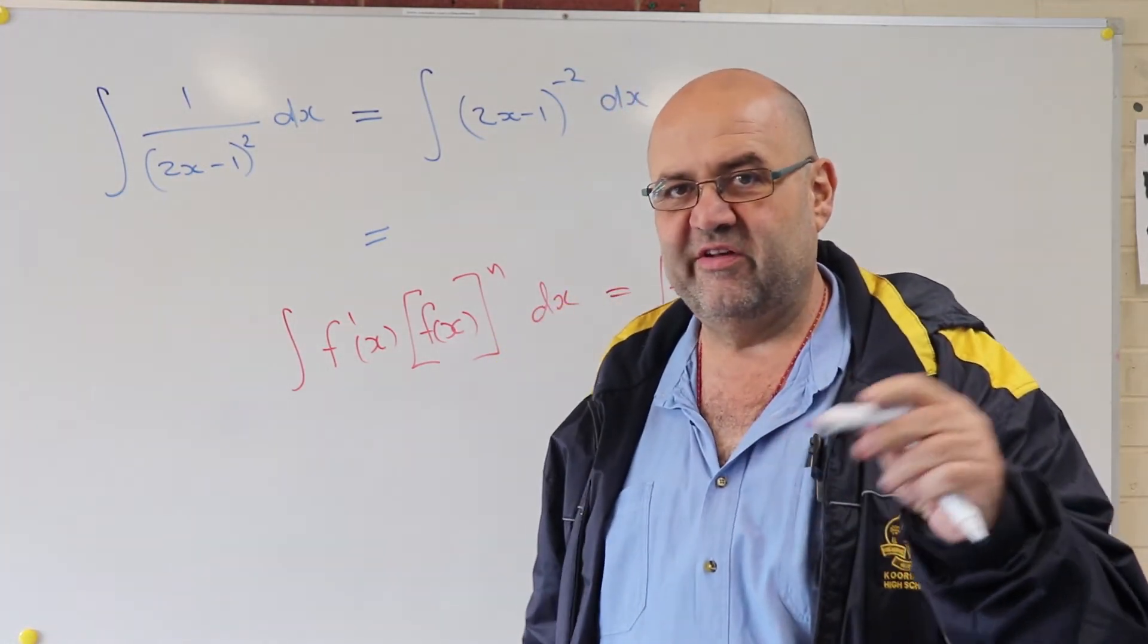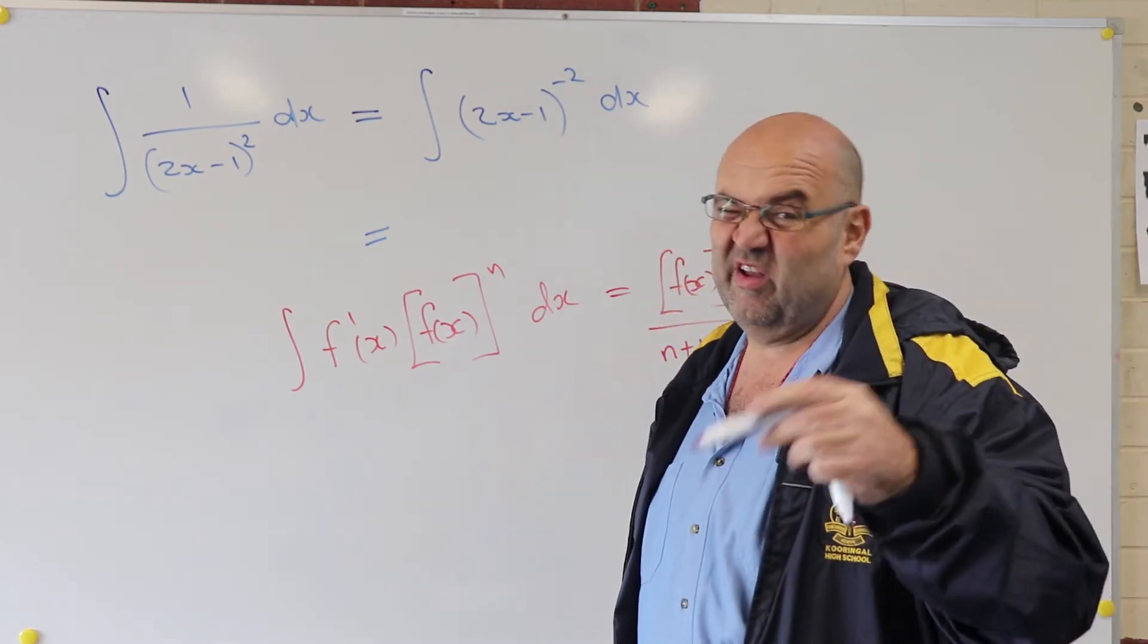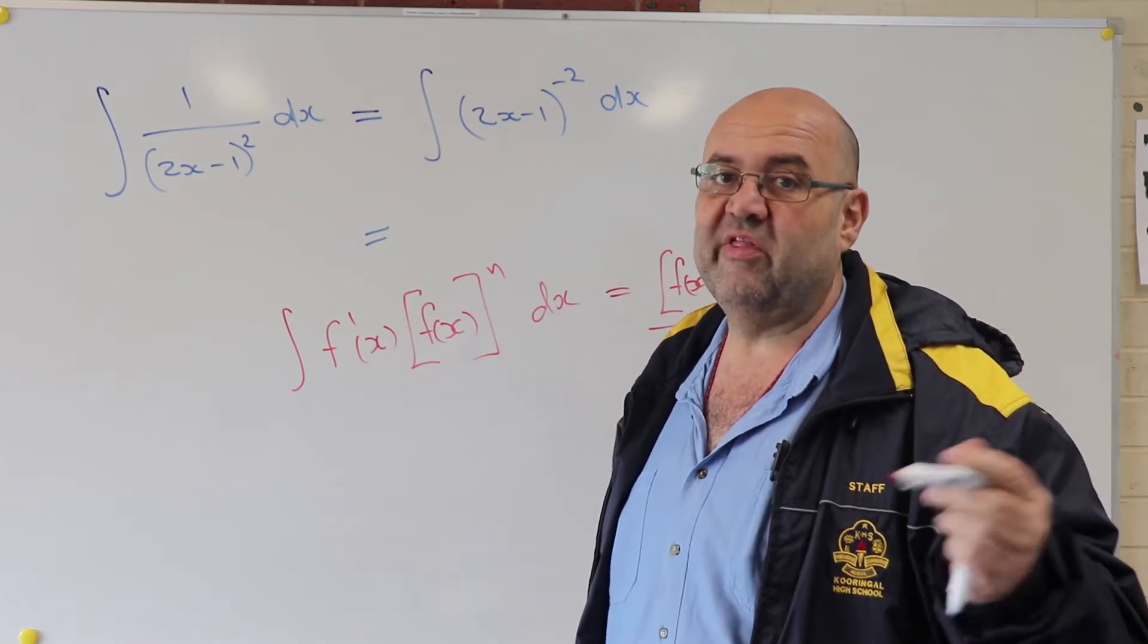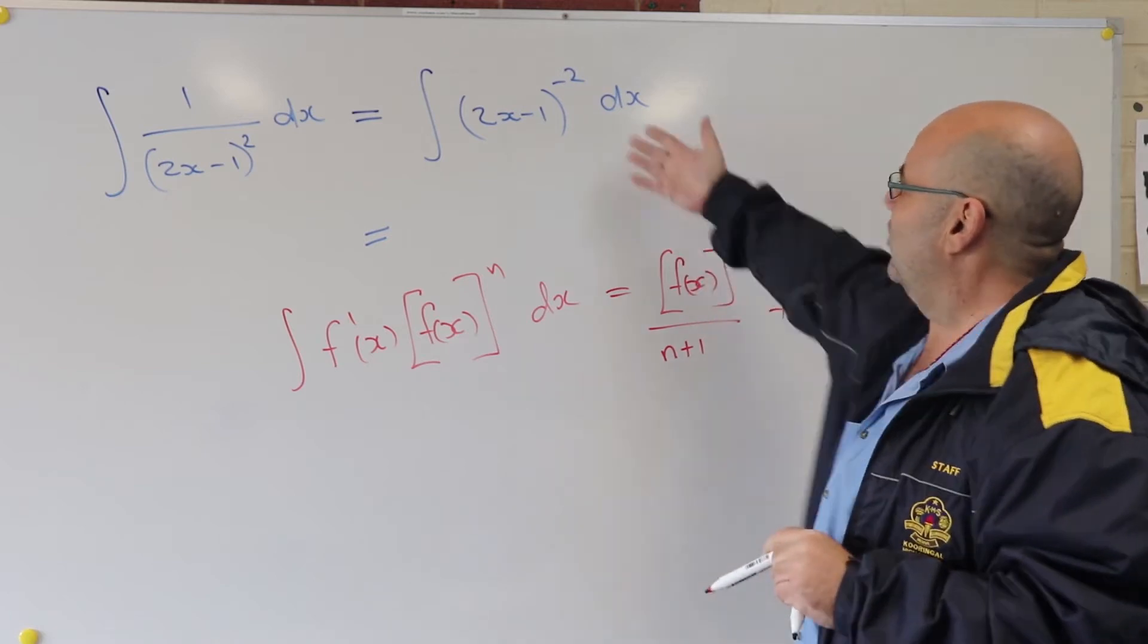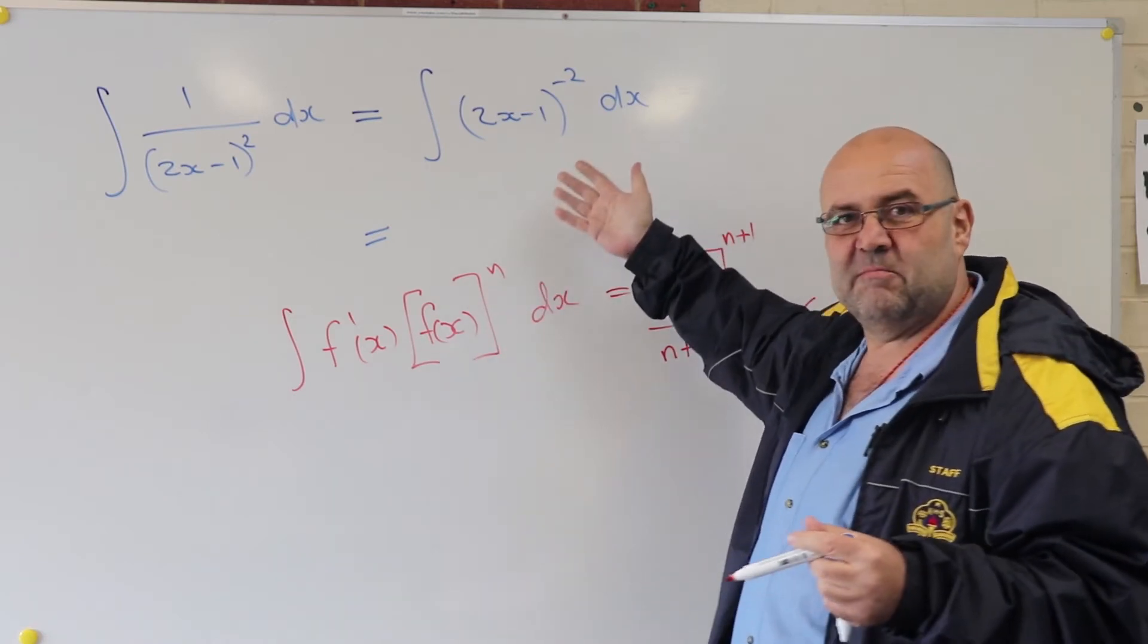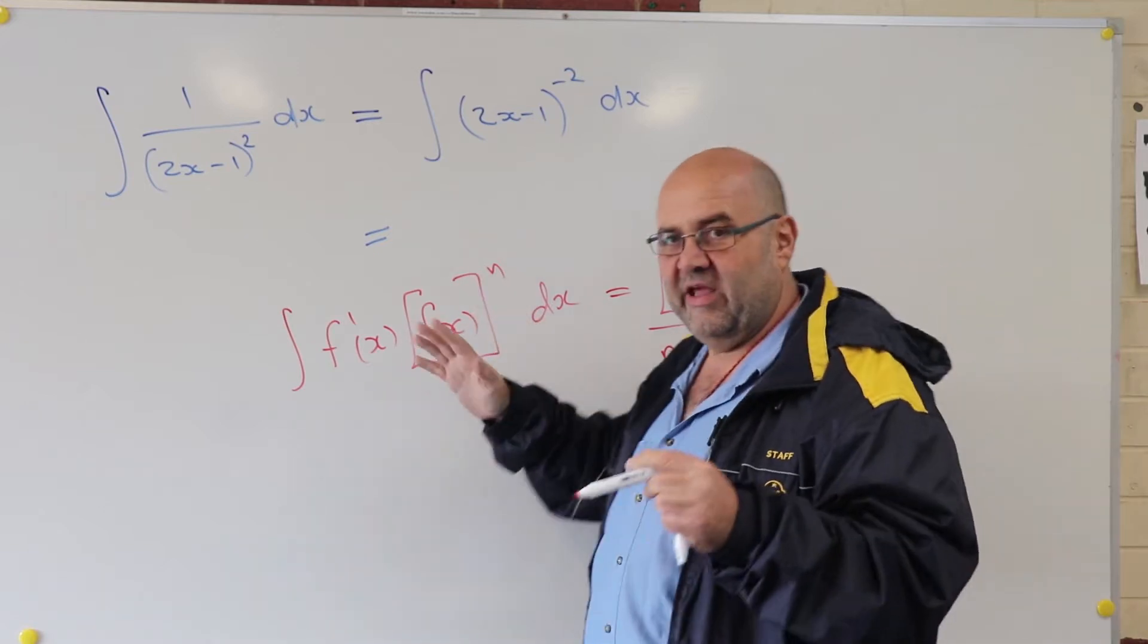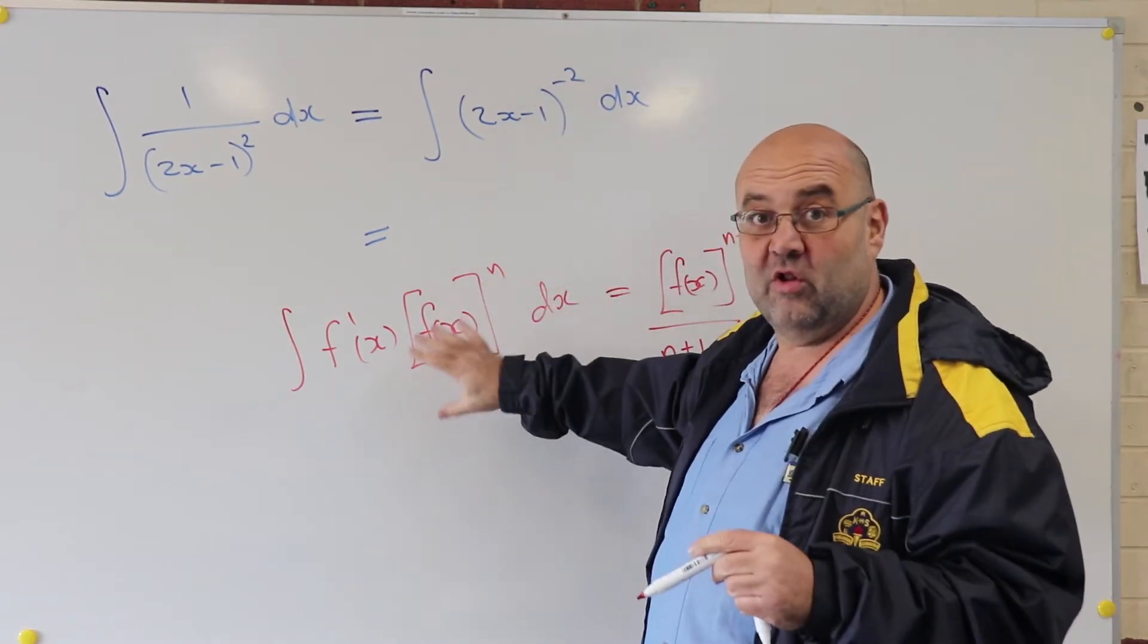And they make the distinction that n does not equal -1, of course. We'll see why. You would have seen that in Advanced and Extension, but we'll go over that ourselves in Extension 2 here. So, but we look at this and it doesn't look like that. And there's nothing on the standard integrals that looks like this. So what do we do? Well, again, our job here is to see how this can be made to look like that.